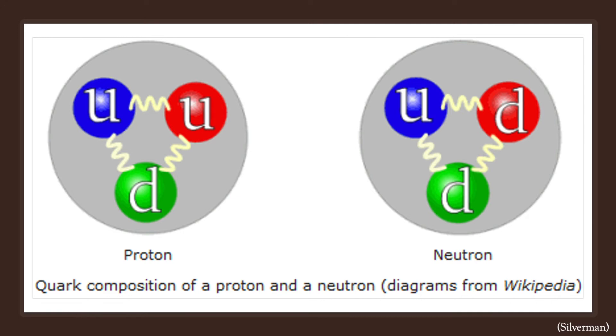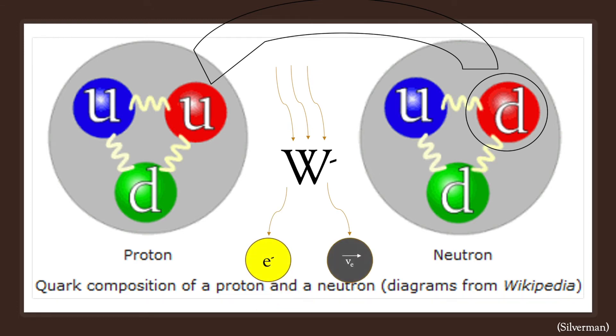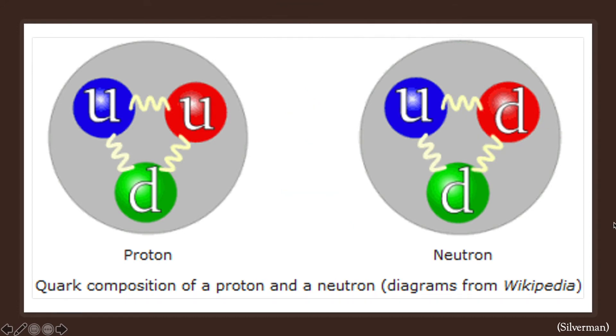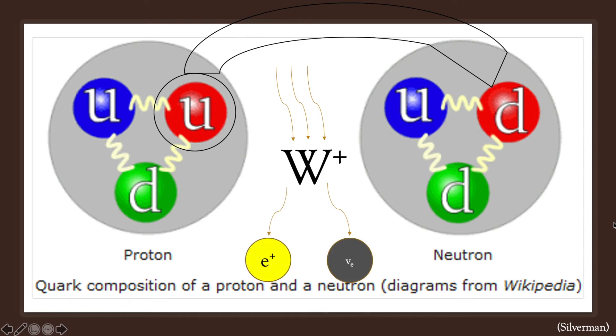The weak force can convert a down quark, shown here, into an up quark, shown here, and a W-boson, which then decays into an electron and an antineutrino, turning the neutron into a proton, as shown here. The weak force does the opposite with an up quark of a proton, converting it into a down quark and a W-plus boson, which then decays into a positron and a neutrino, converting a proton into a neutron.